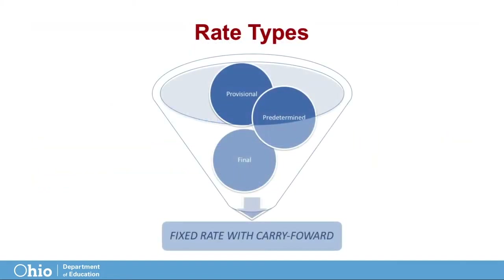There are four rate types an awarding agency could utilize for issuing Indirect Cost Rates, which include Provisional, Predetermined, Final, and Fixed Rate with Carry Forward. Ohio uses the Fixed Rate with Carry Forward methodology.